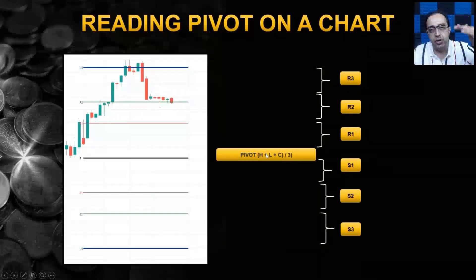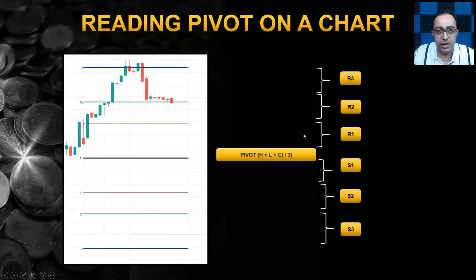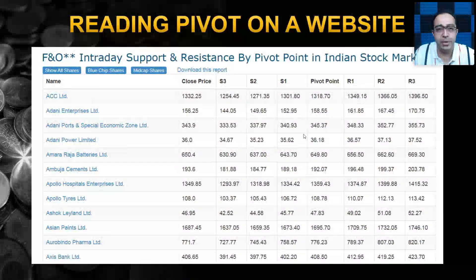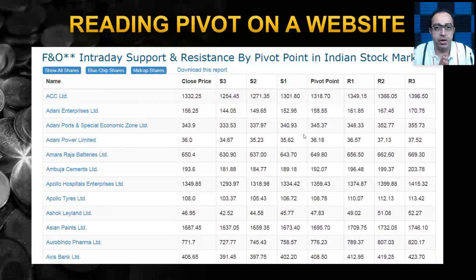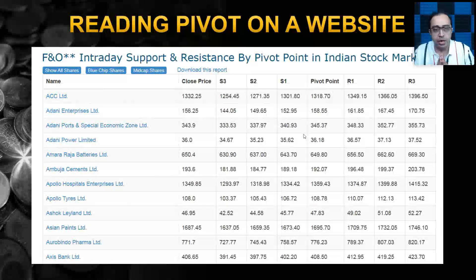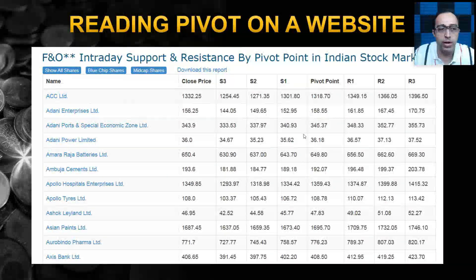The lines above the pivot are your resistance lines and the lines below are your support lines. You have resistances when prices are going up and support levels when prices are coming down. Many people have seen this presented as an Excel-style table on trading websites, with various numbers that traders use to make different kinds of decisions. There are many ways to trade pivot — it's a very fascinating concept.